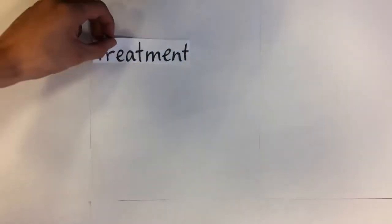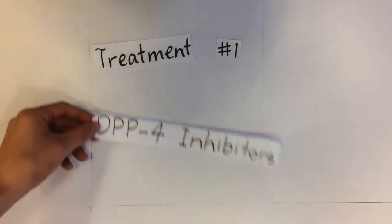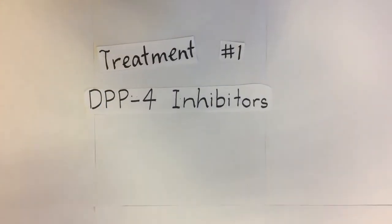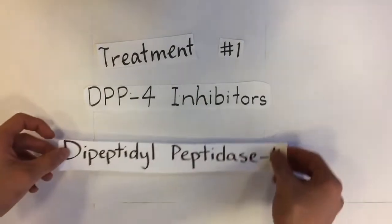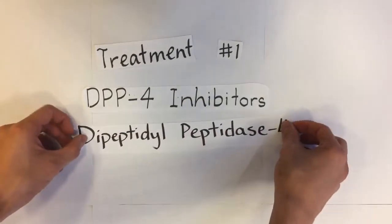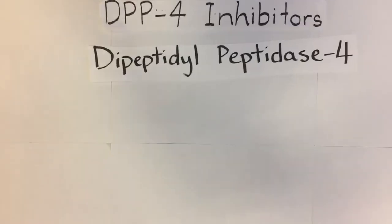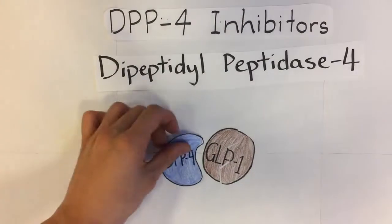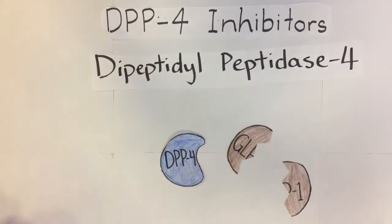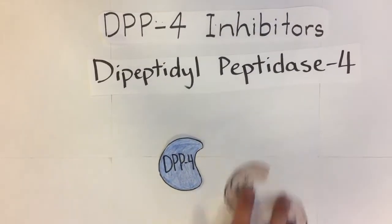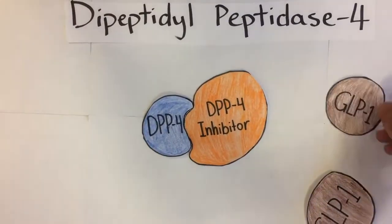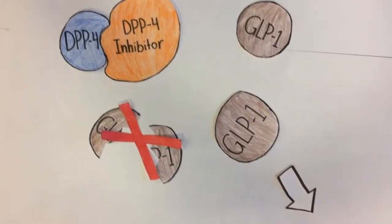One of the treatment methods of type 2 diabetes is the use of drugs that inhibit DPP-4. DPP-4, or dipeptidyl peptidase 4, is an enzyme expressed on the surface of most cell types and rapidly breaks down incretins, such as GLP-1. Thus, if this enzyme is inhibited, incretin levels will increase, stimulating insulin production.